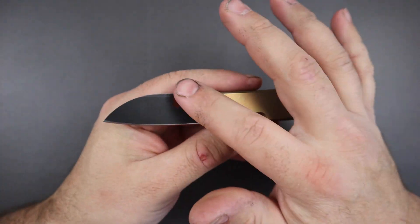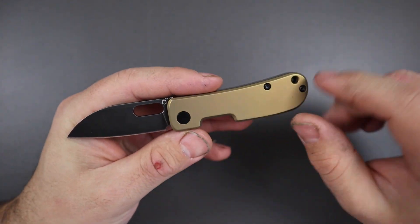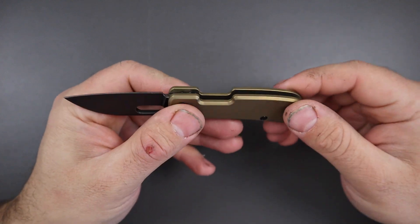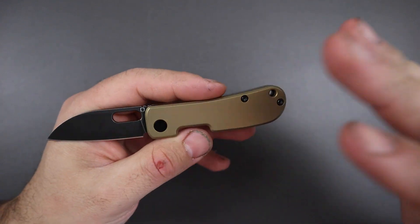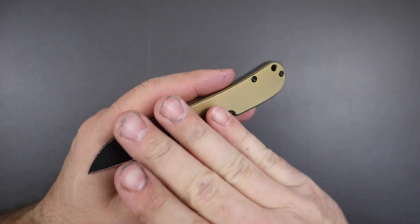Has that sway back design. This one, well both of them actually have titanium scales. This one is kind of a bronze and black colorway, looks really cool. You can also get a plain titanium version with stonewashed blade.